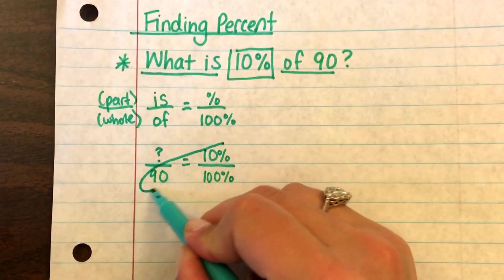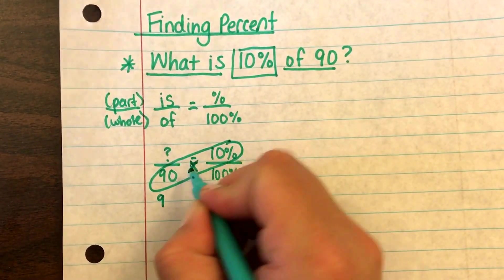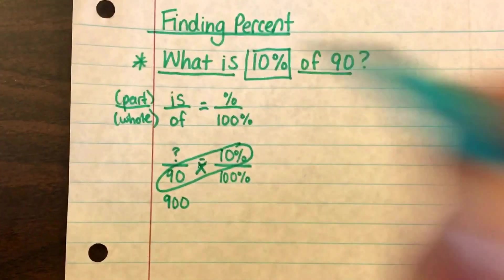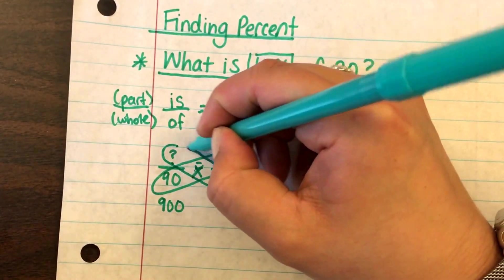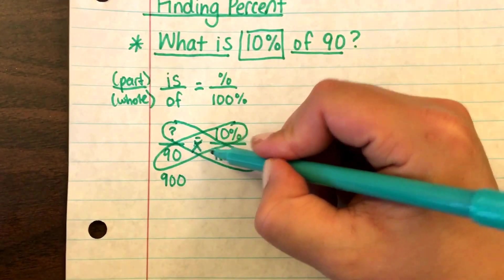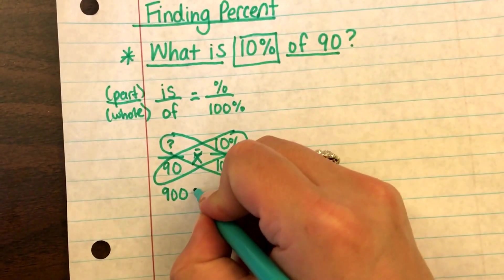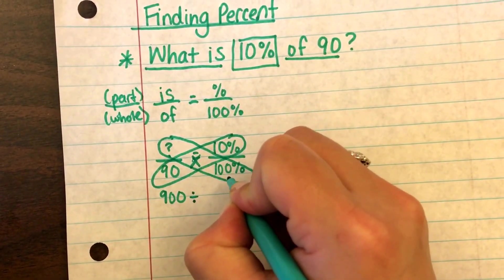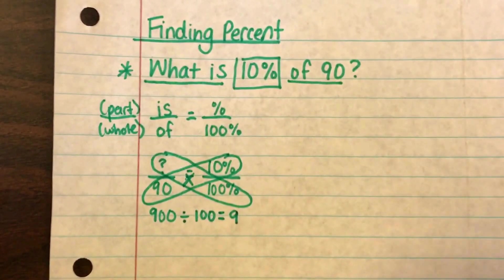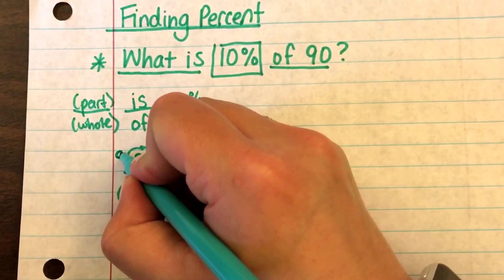Now you can cross-multiply to easily find the question mark. I'm going to connect 90 and 10 — 90 times 10 is 900. So question mark times 100 also has to equal 900. To find the question mark, I'll do the opposite operation: take 900 and divide it by 100, and I'm left with nine.